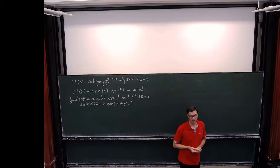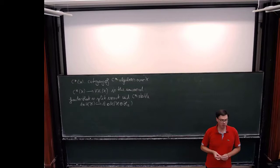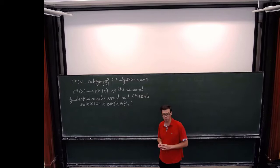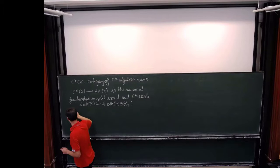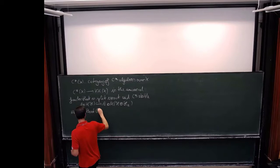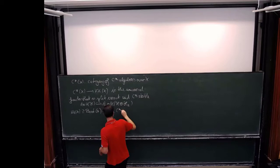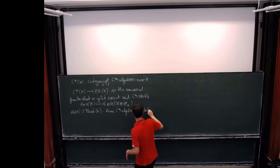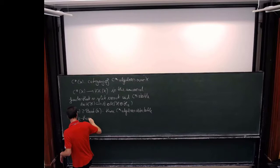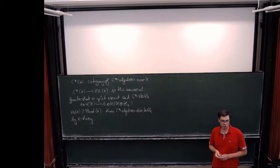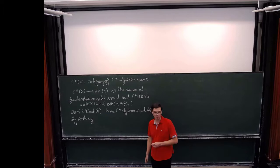That's probably enough for what KK theory for C* over X, or for a group, should do. Ole Gunnarsen just said something about some kind of spectra. There's also a close link to certain module spectra, but for this you should shrink your category to some so-called bootstrap class. Inside KKX you have some subcategory of reasonable C*-algebras which you can detect by K-theory data.